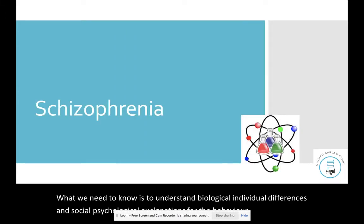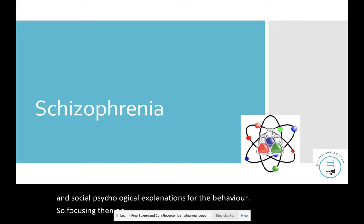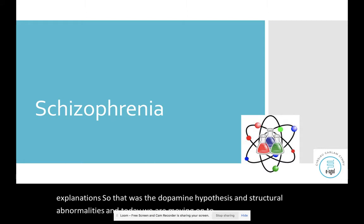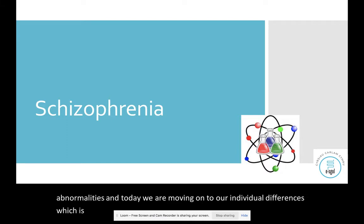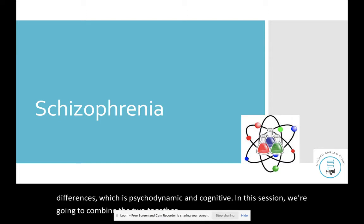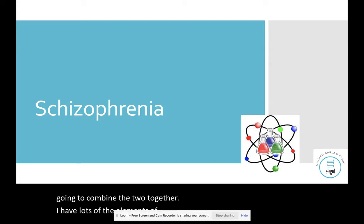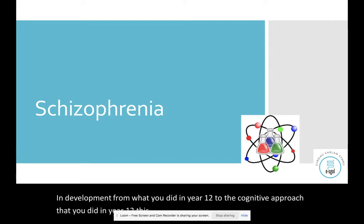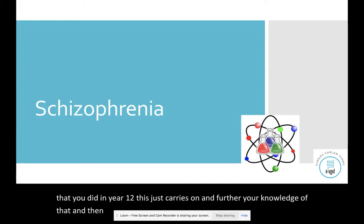Focusing on schizophrenia, we have looked at our two biological explanations — the dopamine hypothesis and structural abnormalities — and today we are moving on to our individual differences, which is psychodynamic and cognitive. In this session we're going to combine the two together. Lots of the elements of these are in development from what you did in year 12, building on the cognitive approach and Freud's theories.